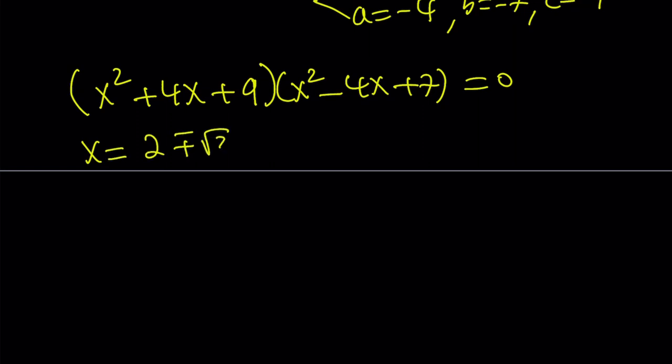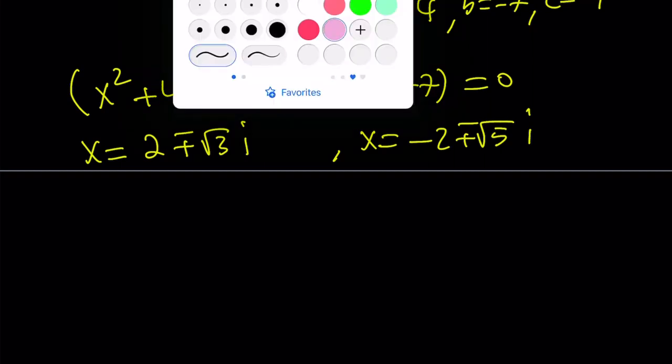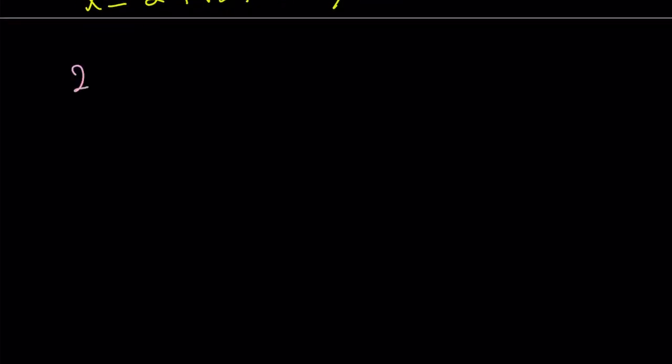x equals 2 plus minus square root of 3i. And x equals negative 2 plus minus square root of 5i. And this brings us to the second method.